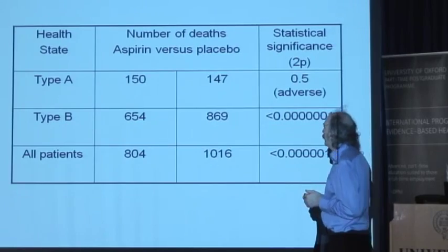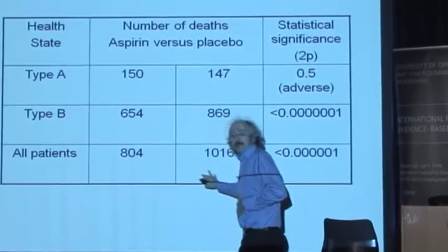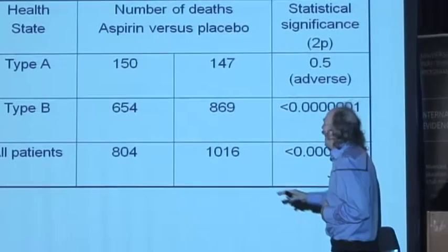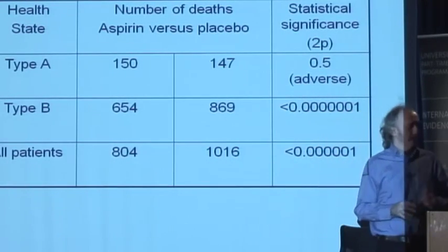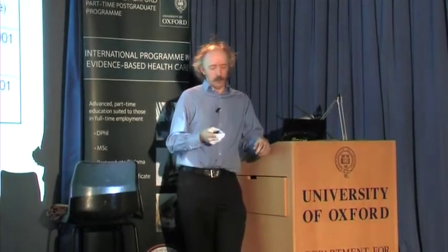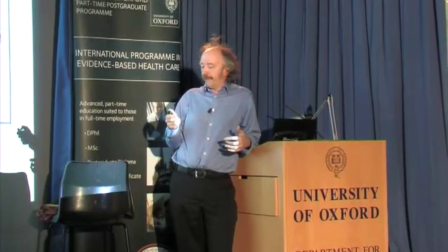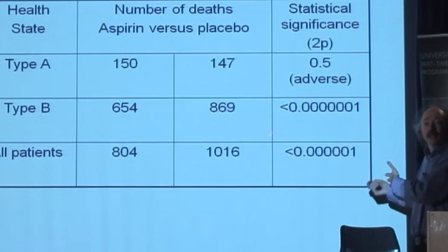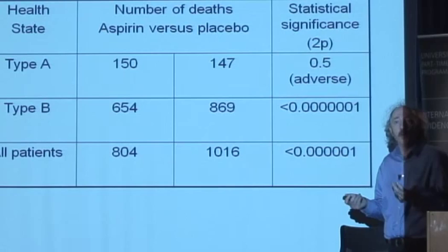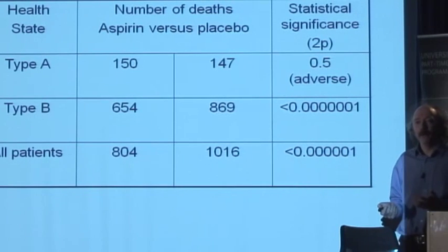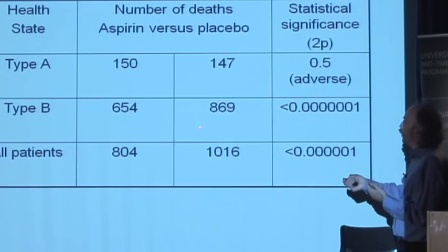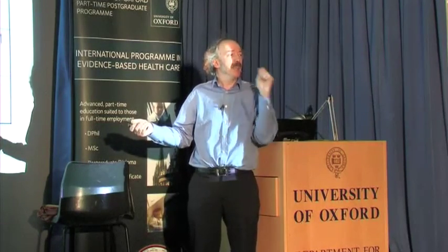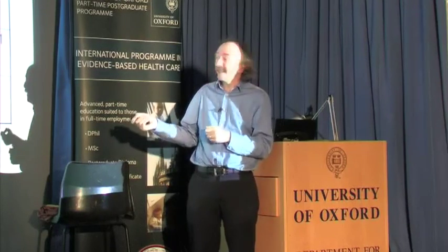This is the overall number of deaths after 35 days — how many people died of a cardiovascular event. 804 in the aspirin group, 1,000 in the placebo group. When they looked at the subgroups, they said: for type B, there's a very big effect — 654 versus 869, massively significant. The p-value is nowhere near 0.05; it's down at one in a million. You could have seen this result by chance one time in a million if aspirin did nothing. And it's less than one in a million.